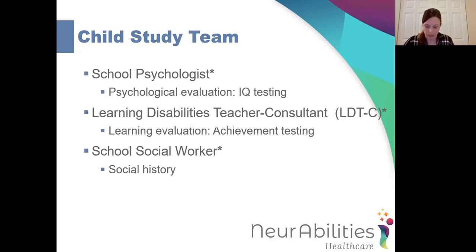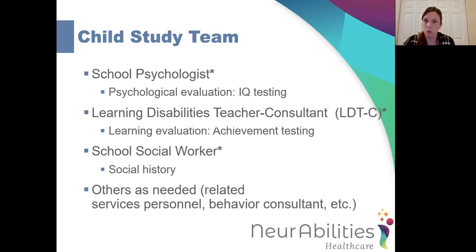These three people — the school psychologist, LDTC, and school social worker — are the main required individuals on the child study team. One of these three will be assigned as your child's case manager, serving as your contact person throughout the entire process and, if your child is classified, holding annual reviews and ensuring the IEP is implemented. However, depending on your child's needs, other personnel may be included, such as related services personnel like speech therapists, occupational therapists, BCBAs or behavior consultants, an audiologist, or a school nurse.